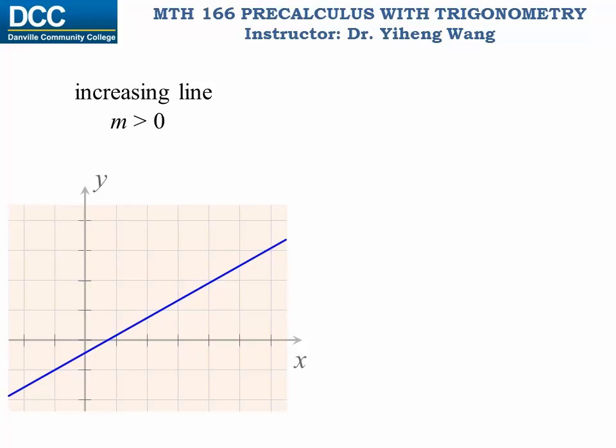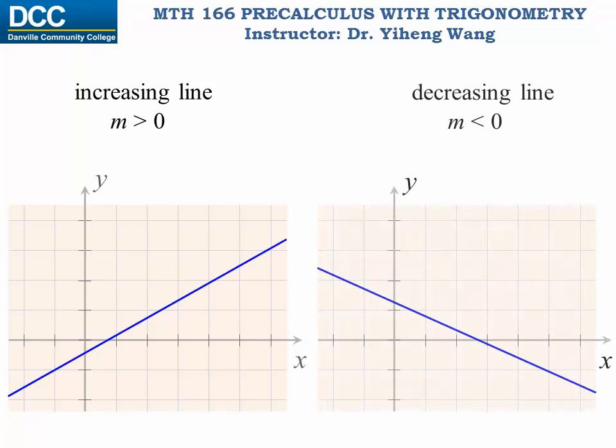If the line is an increasing line, which means that y increases as x changes from left to right, then the slope m is positive. On the other hand, if it is a decreasing line, meaning that y decreases as x changes from left to right, then the slope m is negative.